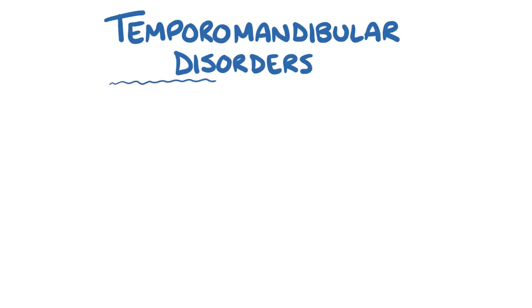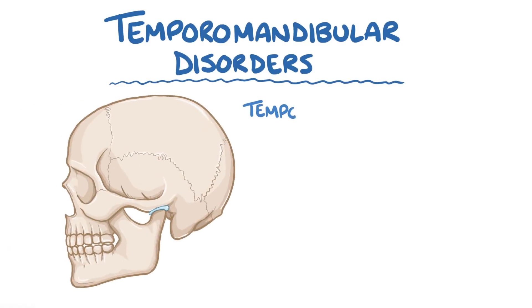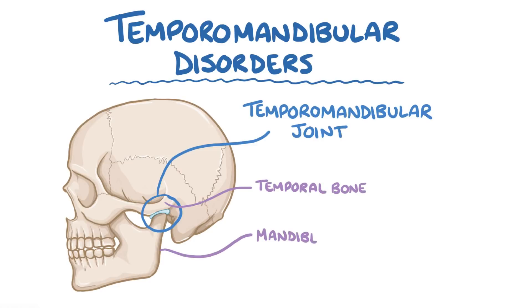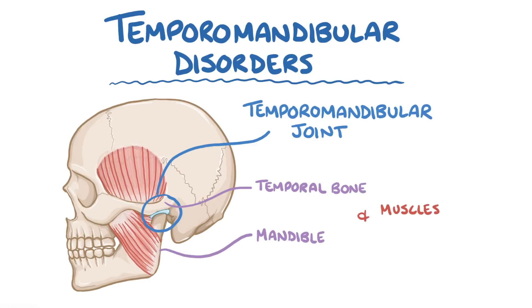Temporomandibular disorders are a group of disorders that all involve the temporomandibular joint, which is located between the temporal bone of the skull and the mandible, or jawbone, as well as the muscles and associated structures that are involved in chewing and speech.